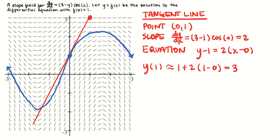So what that's saying is that at x equals 1, the tangent line predicts that the value of the function is up at 3. But we know that in reality, the actual value of the function is probably somewhere about here. And that's a pretty big error — it's not a very good approximation. We can see on the slope field why: dy/dx is subject to a lot of change on the interval 0 to 1. At x equals 0 the slope is positive and pretty steep, but by x equals 1 it's really leveling off and going close to horizontal. So that's why our tangent line approximation is not very good.